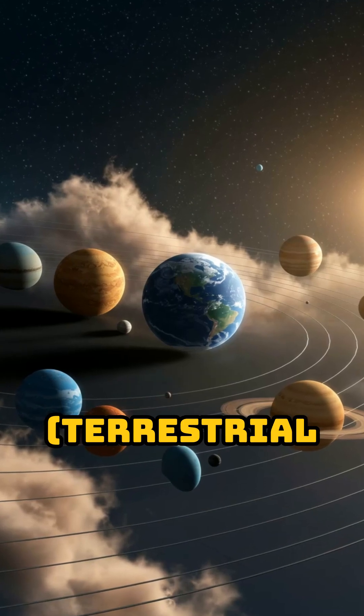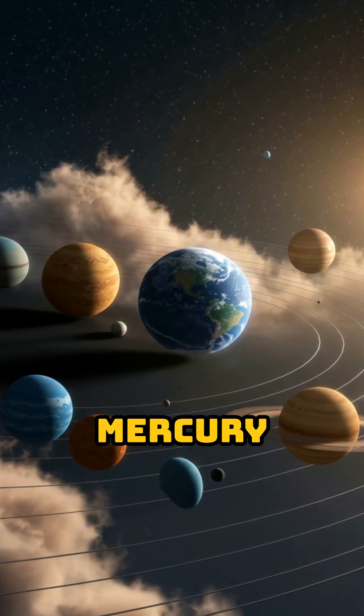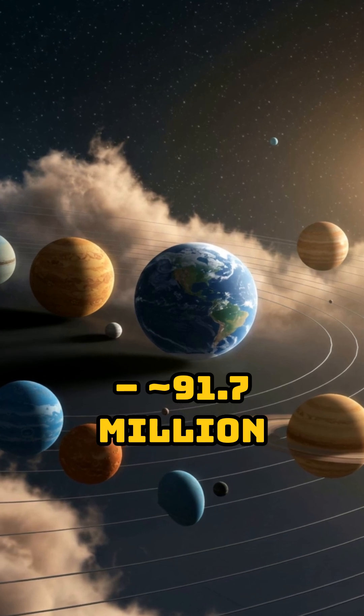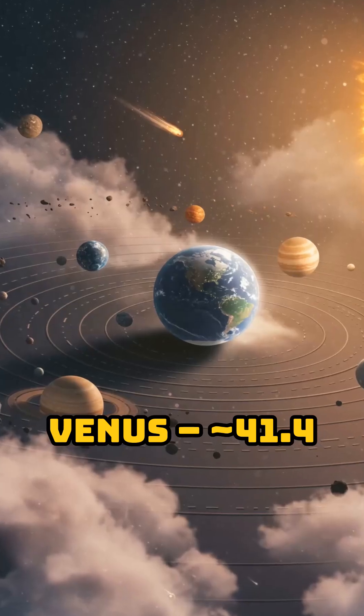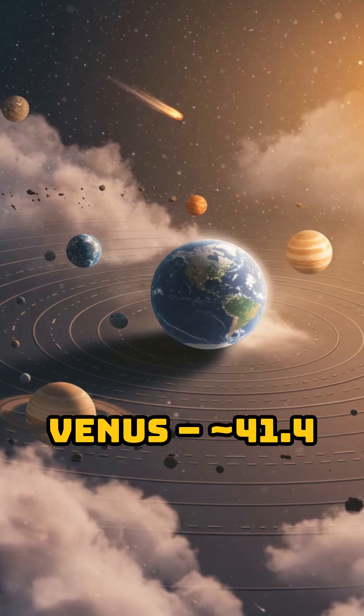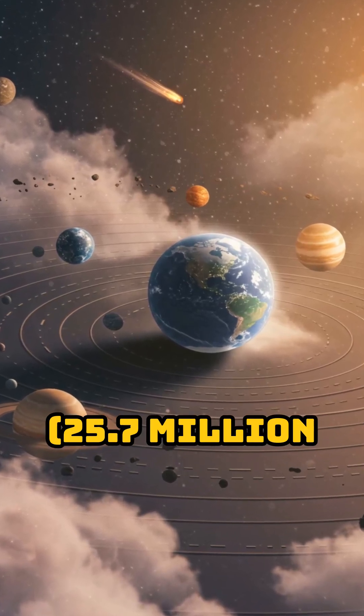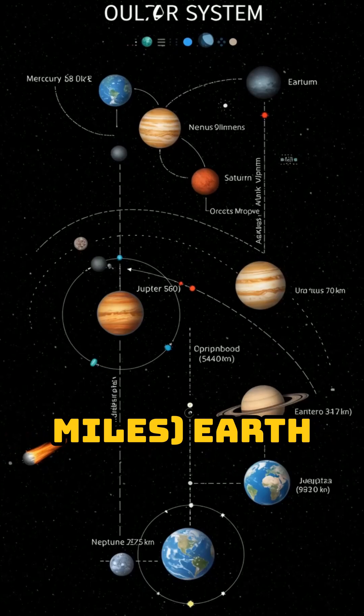Inner planets, terrestrial planets: Mercury, 91.7 million km, 57 million miles. Venus, 41.4 million km, 25.7 million miles. Earth, zero km, you're already here.